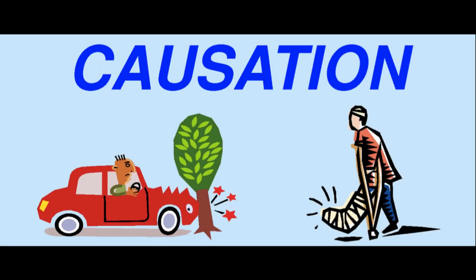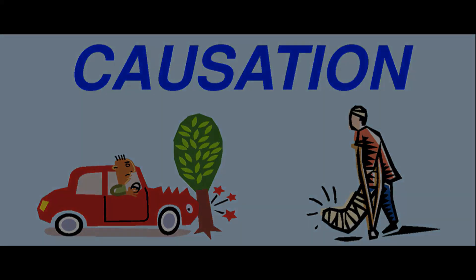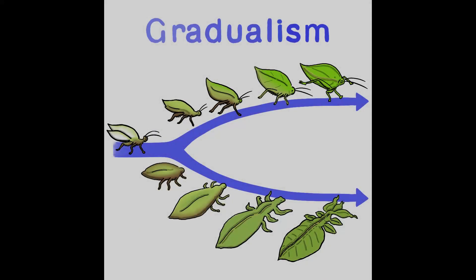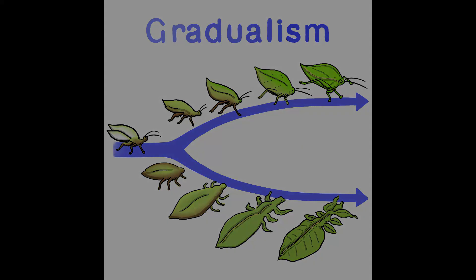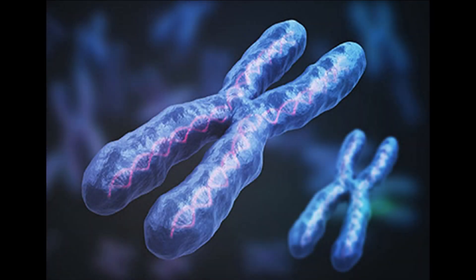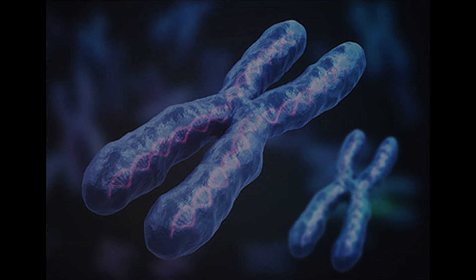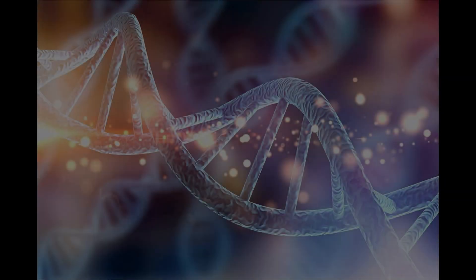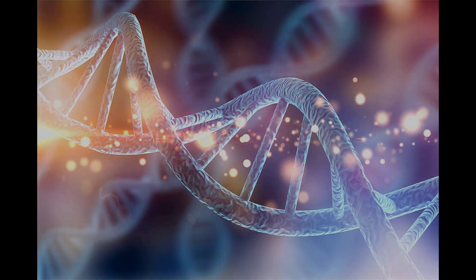During this time he came up with a theory of causation based on the distinction between material, efficient, formal and final causes. Aristotle had a gradualist conception of the natural world and living things, perhaps best expressed in the saying 'natura non facit saltum', or nature does not make jumps. He formed a theory of sexual generation and transmission of hereditary traits, despite having no knowledge whatsoever of DNA and genetics.